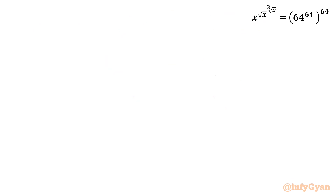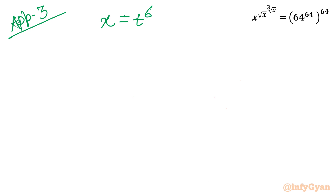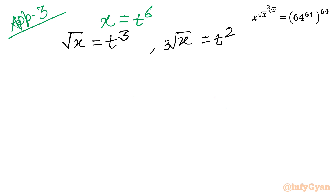Now approach number 3 uses substitution. Let x equal to t power 6. Then square root x will be t cubed, and cube root x will be t squared. So we can convert our equation entirely into t.